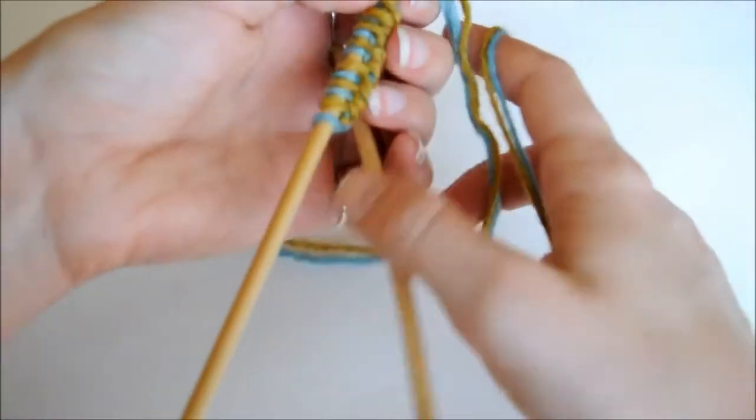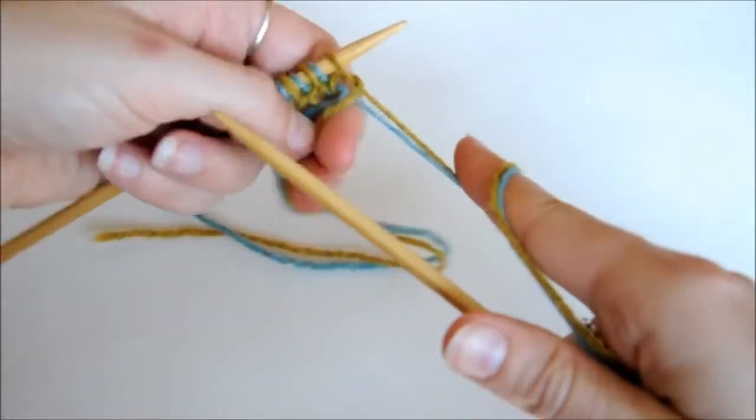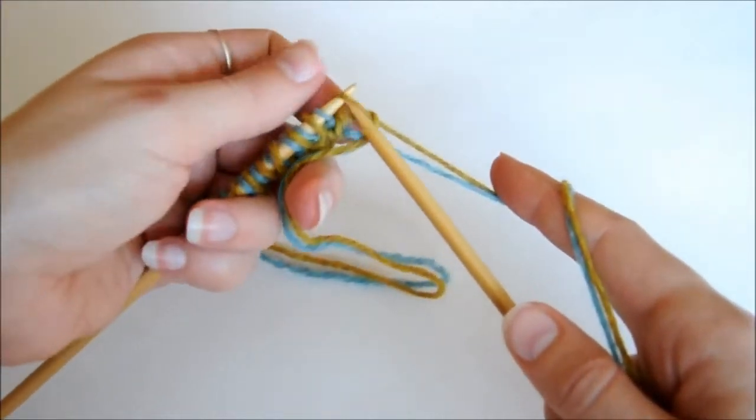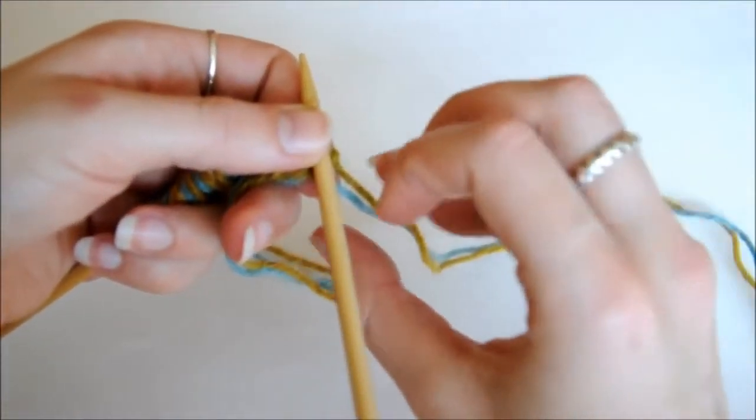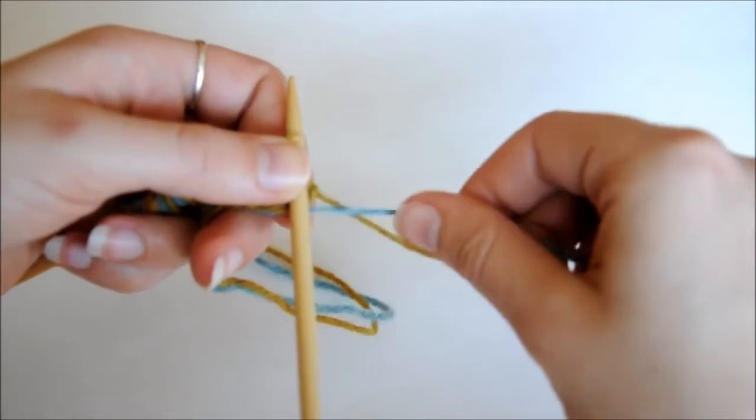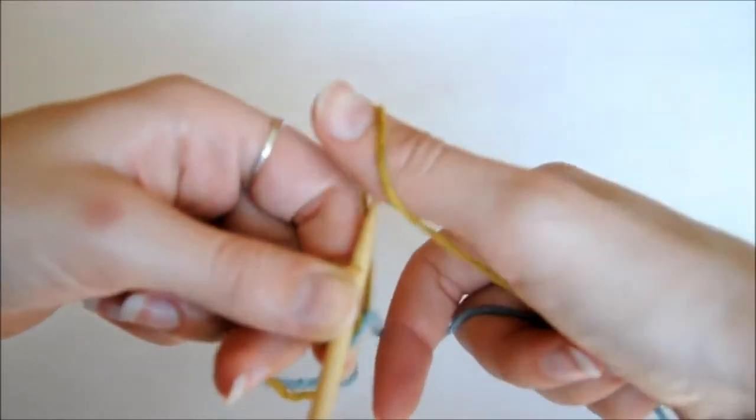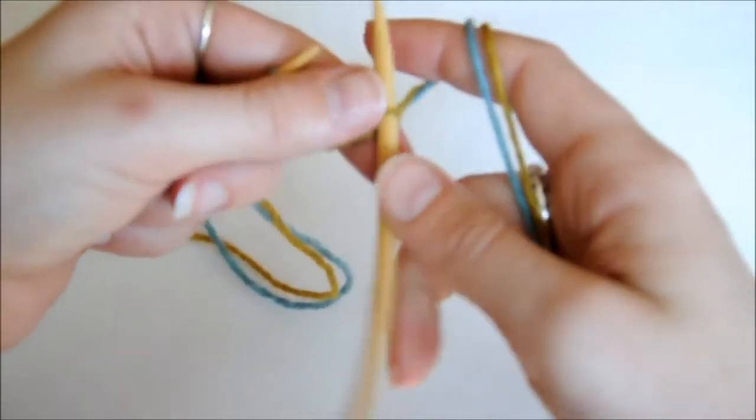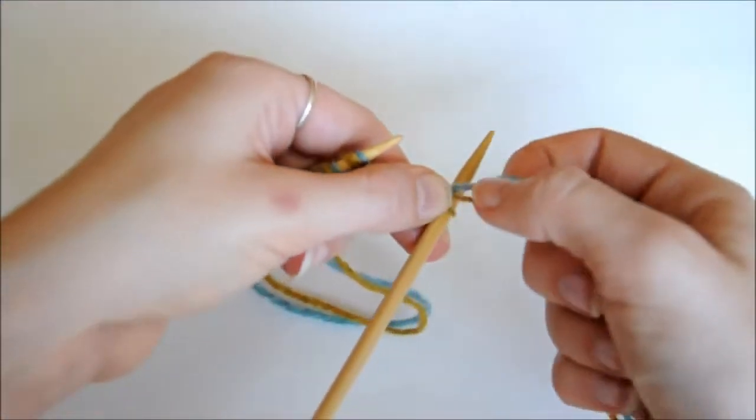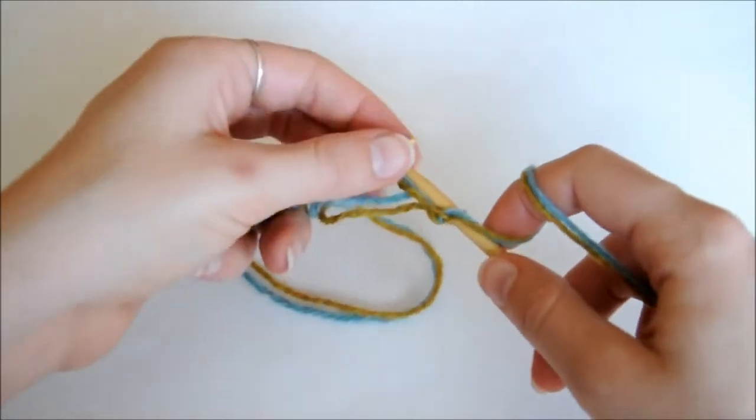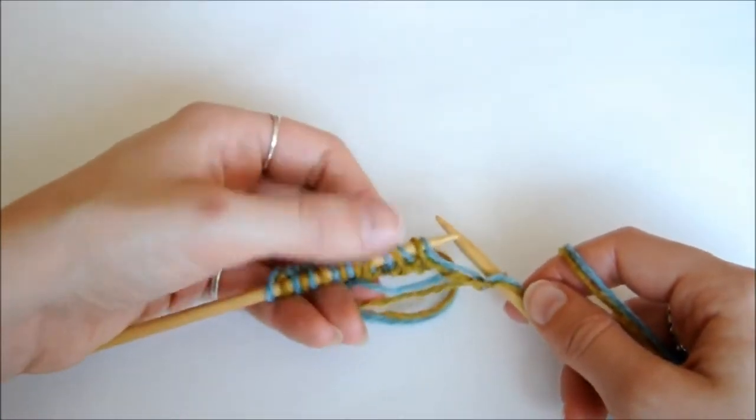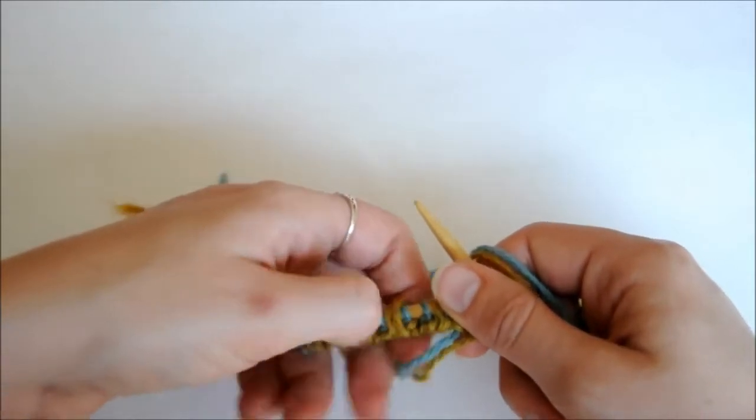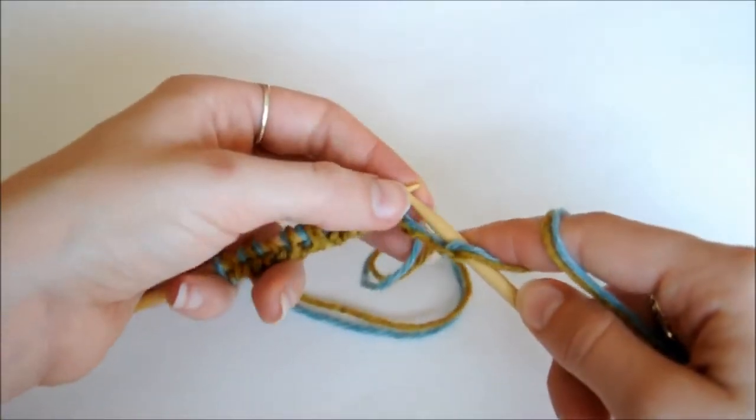So we can turn our work, and now we're ready to do the next row. So we first want to twist our yarns. We're going to bring the blue across the yellow, and then we can just knit that first stitch. The reason why you want to twist the yarn at the beginning of the row is that's what keeps you from having two separate pieces of knitting joined at the cast-on edge. And you really need to make sure to remember to twist your strands.